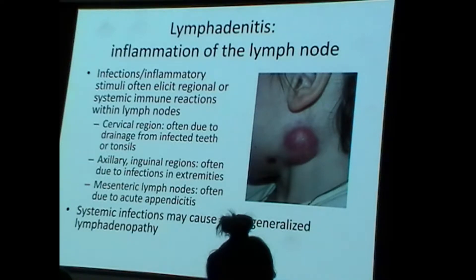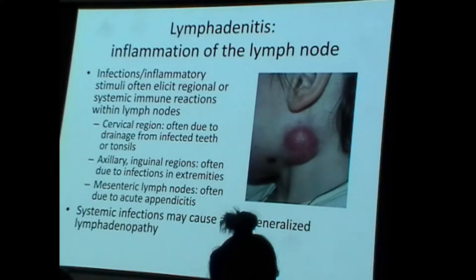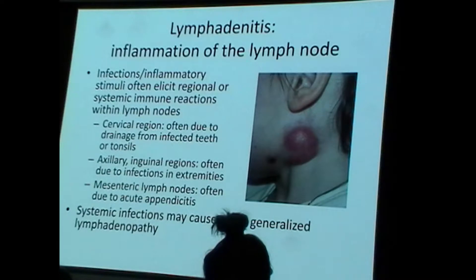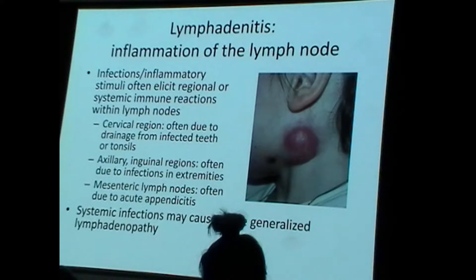What lymph nodes are enlarged in the picture? The most common lymph nodes affected by lymphadenitis are those in the cervical region, the axillary and inguinal regions, and the mesenteric region. Lymph nodes that are inflamed or enlarged in the neck — cervical lymph nodes — are usually due to a dental infection or a tonsillar infection.